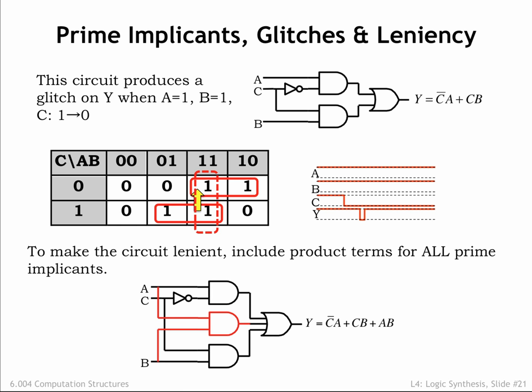But if we do include that implicant as a third product term in the sum-of-products, no glitch can occur on the Y output. To make an implementation lenient, simply include all the prime implicants in the sum-of-products expression that will bridge the gaps between product terms that lead to potential output glitches.